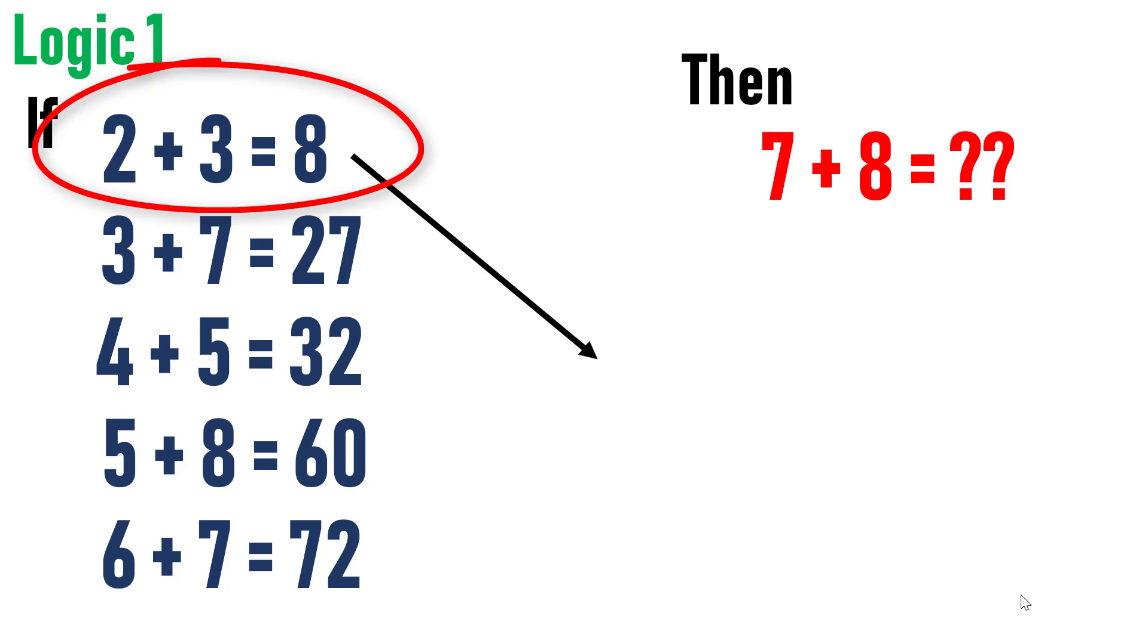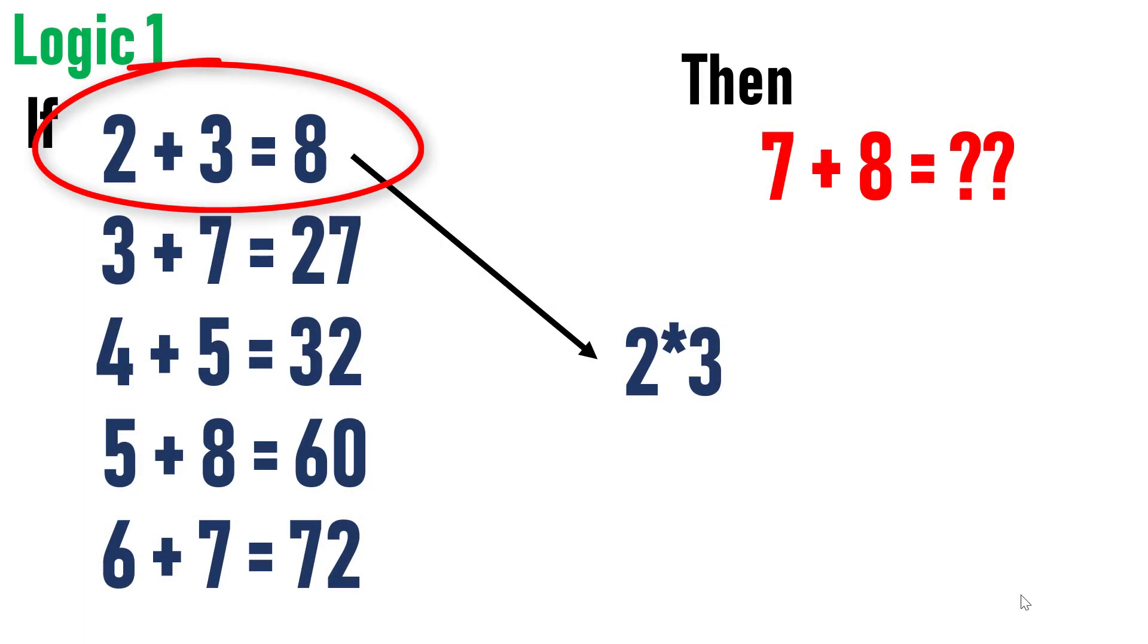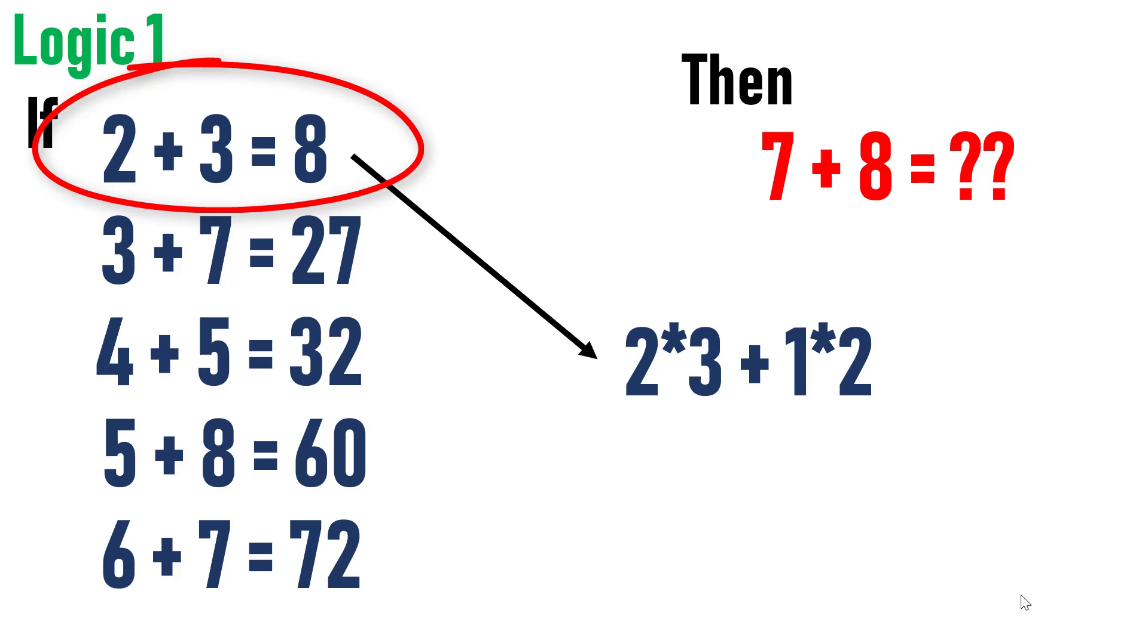Hence, we have to make one assumption that the first number of the previous pattern to this equation will be 1. So that the logic will hold good for equation also. Multiplying two numbers will yield 6 plus 2 into 1, which we have assumed will yield 2. Adding both will fetch 8. That is an intended solution.